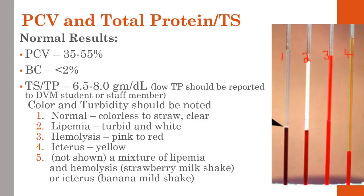Normal results for our PCV are 35 to 55%. Buffy coat should be less than 2%. Total solids numbers should be between 6.5 and 8 grams per deciliter. A low total solid should be reported to your DVM student or staff member — it may mean that this pet doesn't go to surgery. So if you get a 3 or 3.5, that's something we definitely need to know about.